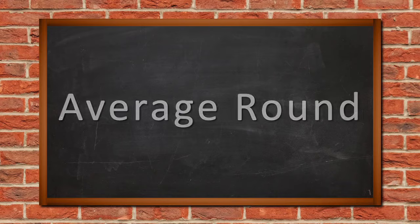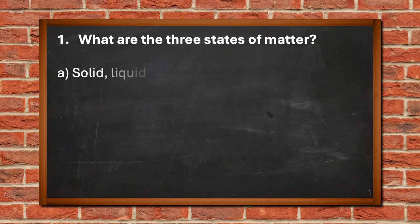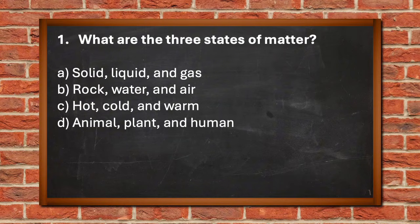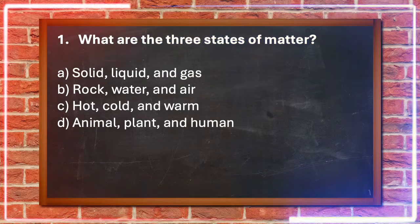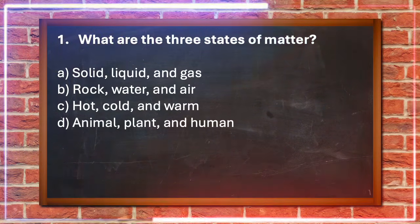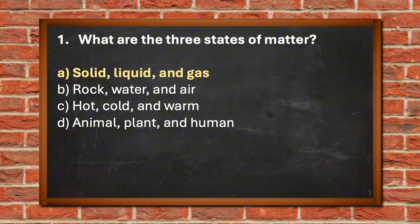Average round. Question number 1. What are the three states of matter? A. Solid, liquid and gas, B. Rock, water and air, C. Hot, cold and warm, D. Animal, plant and human. The answer is A. Solid, liquid and gas.